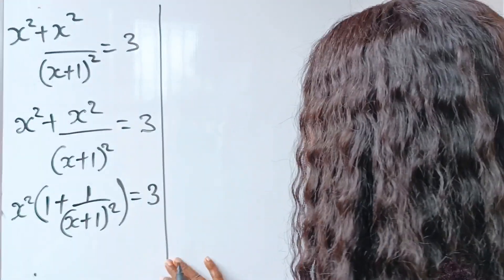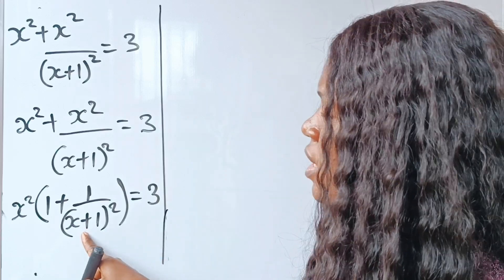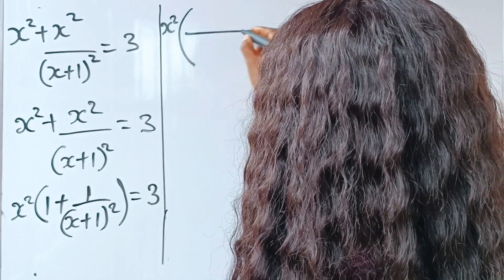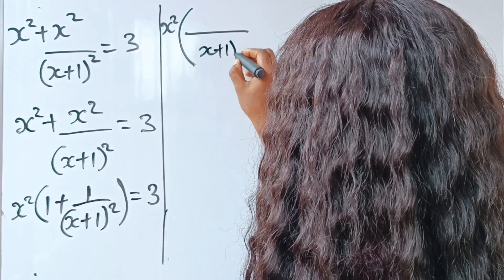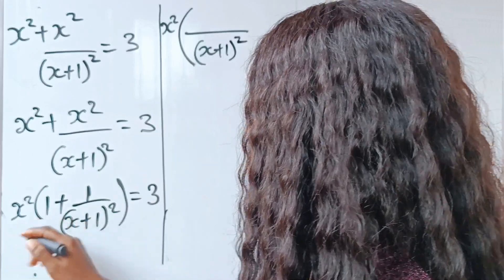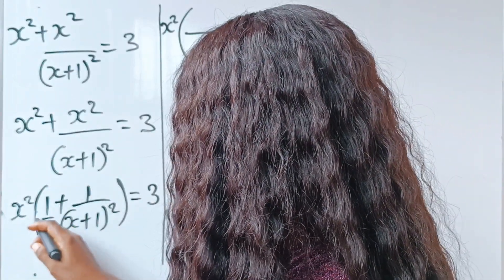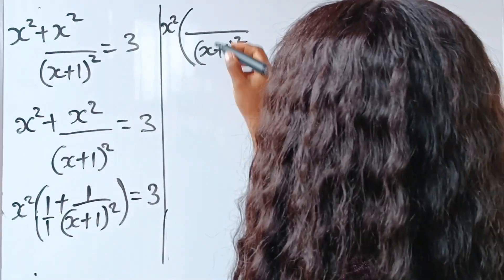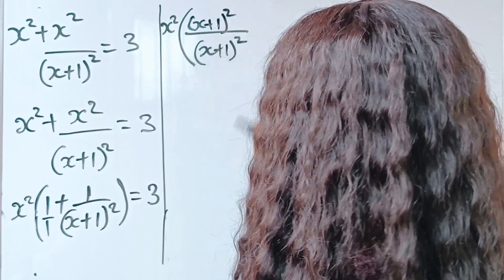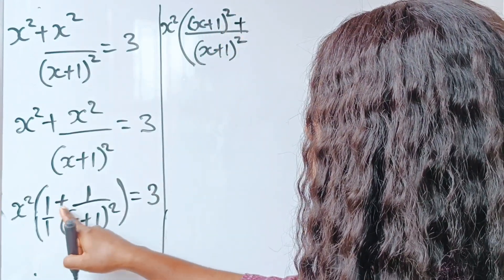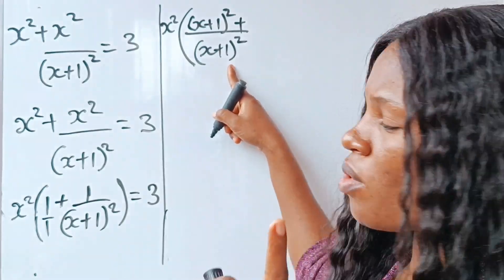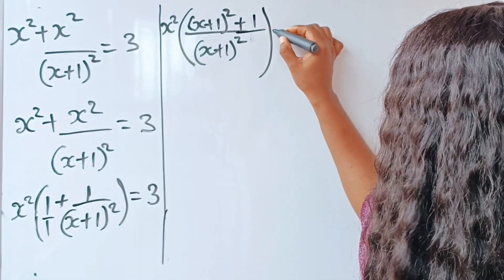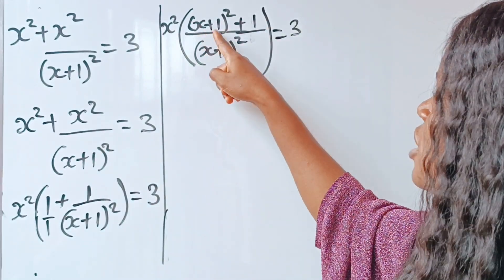To do that, when you look at this you'll notice that the LCM should be x+1. So we have x squared, brackets, the LCM is (x+1) squared. Now x — this is just 1 over 1 — when 1 divides this you're going to have (x+1) squared multiplied by 1, which is still (x+1) squared. Plus, when this is divided by this, 1 times 1 gives us 1. All right, equal to 3.